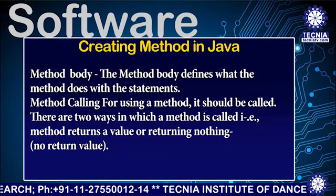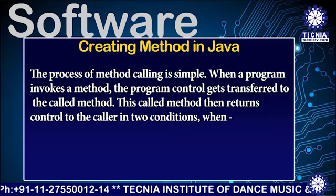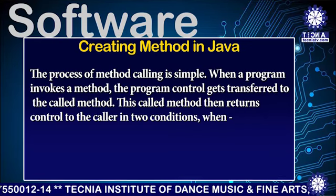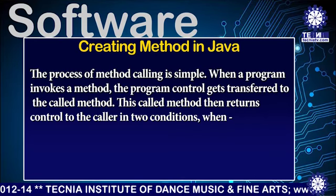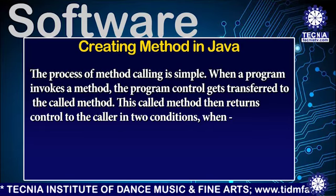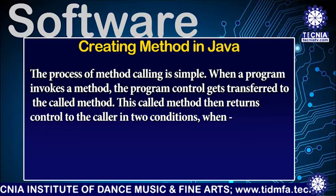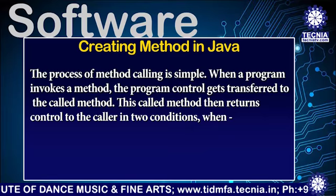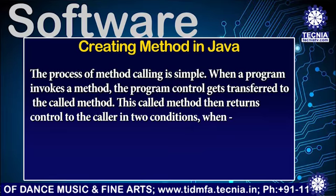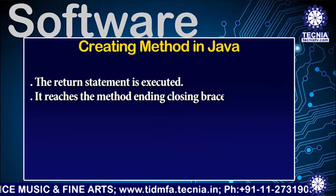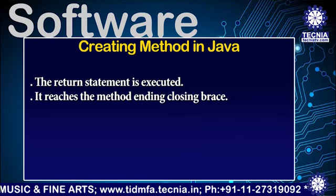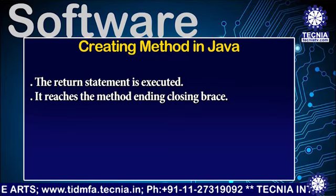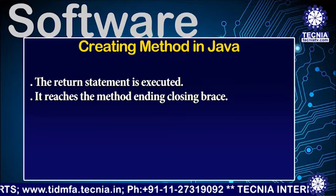No value return. The process of method calling is simple. When a program invokes a method, the program control gets transferred to the called method. This method returns control to the caller in two conditions: when the return statement is executed, or when it reaches the method's ending closing braces.